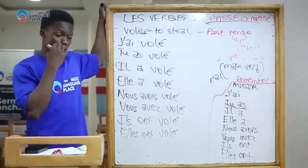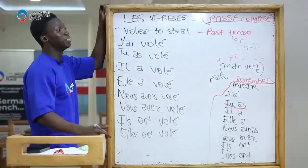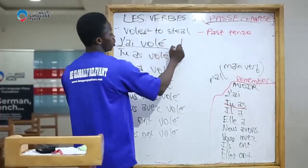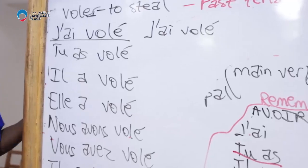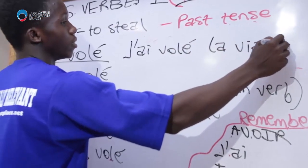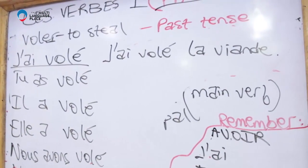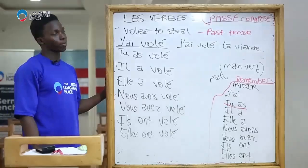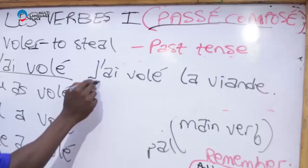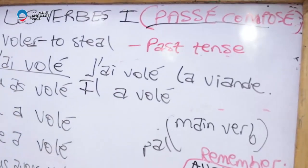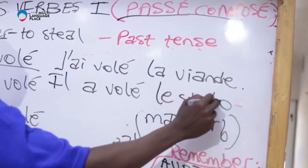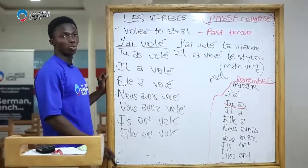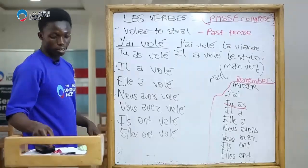So if you want to say 'I stole the meat,' that becomes j'ai volé la viande. And if you want to say 'He stole the pen,' that becomes il a volé le stylo. Remember, first group verbs change to -é accent aigu. That is the key behind the conjugation in passé composé.